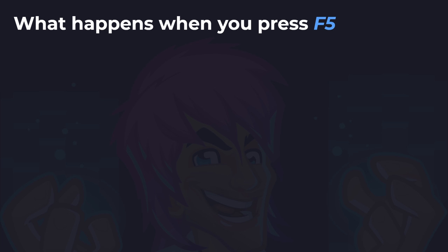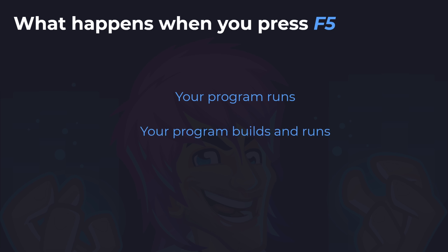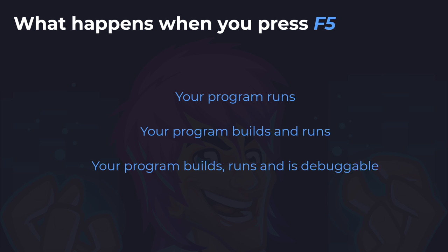We'll do two more questions. The next question is: what happens when you press F5? Does your program run, your program build and run, or your program builds, runs and is debuggable? The answer is your program builds, runs and is debuggable. When you press F5, Visual Studio will first check if your program has changed and if so rebuilds it, then it runs your application and also attaches the debugger to the program. We'll cover this more in future lessons, but you can also run your application without the debugger attached — however that is a different command.